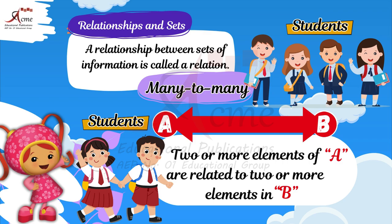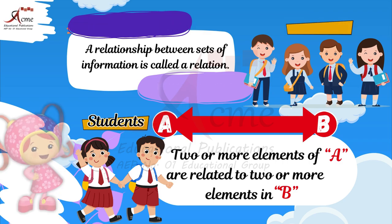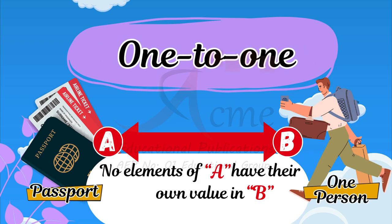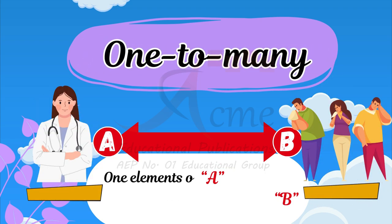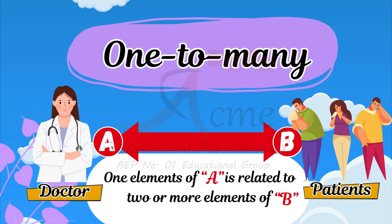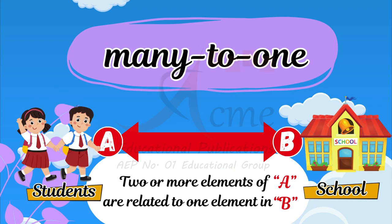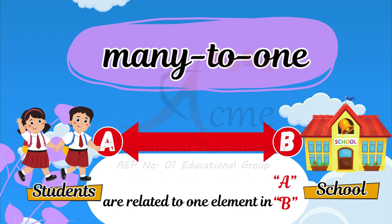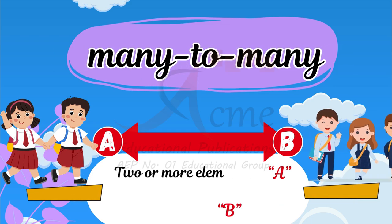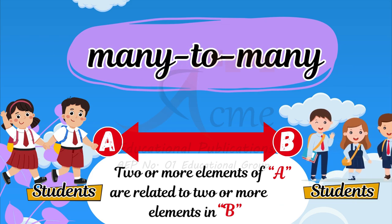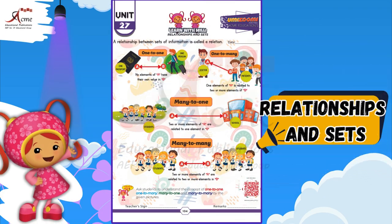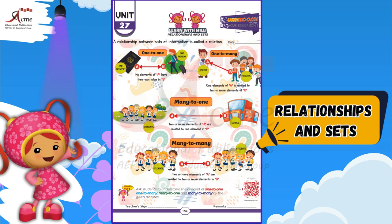Great job, kids! Today, we learned about different types of relationships: one-to-one, one-to-many, many-to-one, and many-to-many. Remember, relationships help us understand how things are connected.